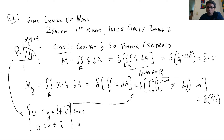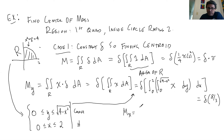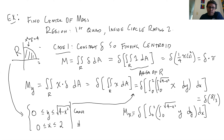For Mₓ, all the bounds are the same but y appears inside instead of x: Mₓ = δ · ∫₀² ∫₀^√(4−x²) y dy dx. By symmetry of the quarter disk, Mₓ = Mᵧ = δ·(8/3). You could note this from symmetry and skip the calculation.